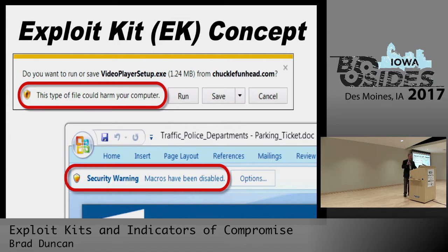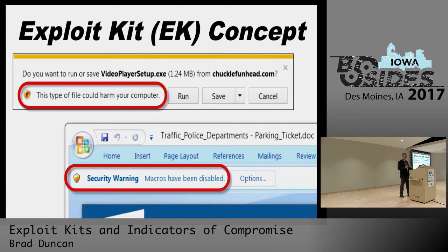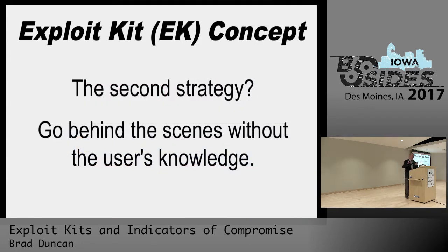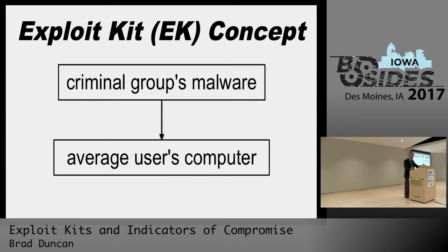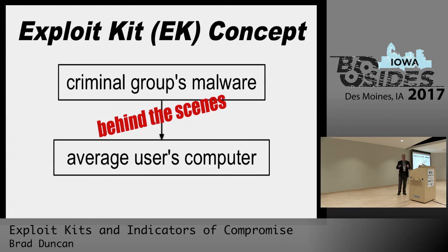With this first strategy, there's usually plenty of warning that what you're doing will have negative consequences. For example, that chucklefunhead.com file gives a warning saying this type of file will harm your computer. The Word document with a malicious macro has a security warning, and default installations of Microsoft Office do not enable macros by default. But the second strategy is when malware authors try to distribute malware behind the scenes — you're doing regular routine internet browsing and somehow your computer gets infected without knowing why. That is the concept behind exploit kits.